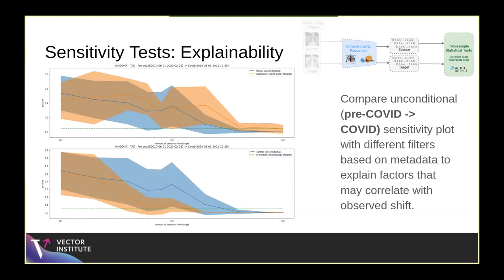Similarly, for a somewhat unexplained shift, there's a difference between institutions. For Credit Valley Hospital, the line hugs the control line pretty much perfectly — it doesn't contribute as much to the COVID shift. When you use Mississauga Hospital, there's a considerable dip well below the control line — statistically significant with fewer samples than the unconditional distributions.